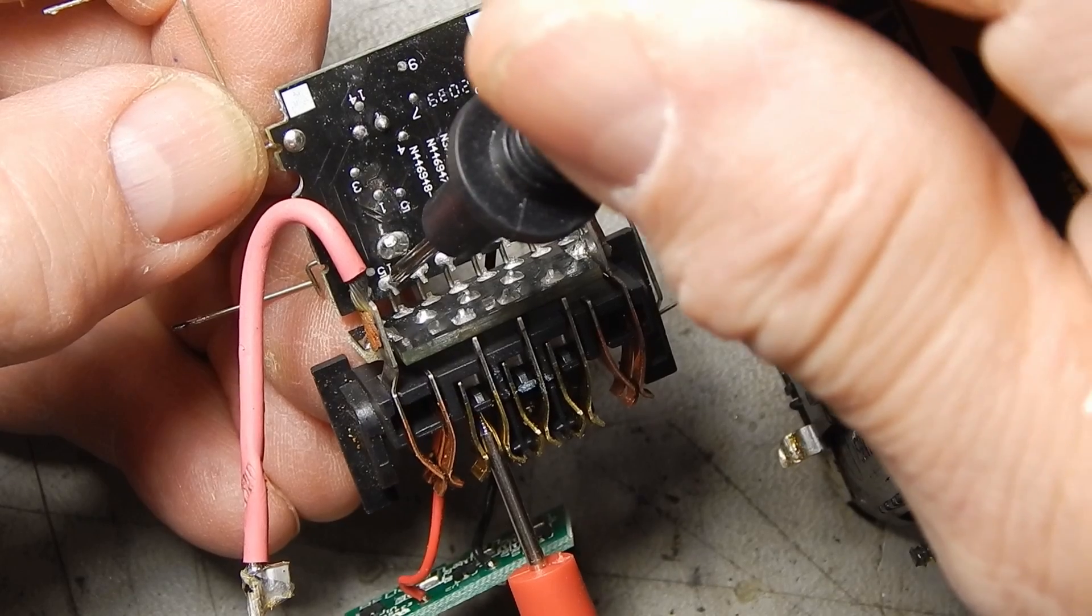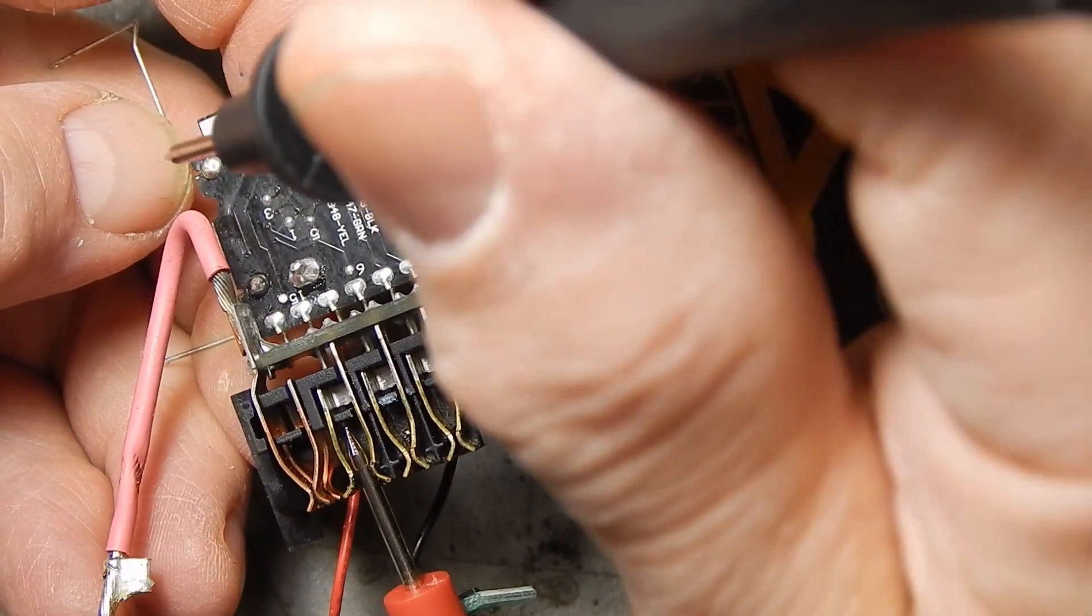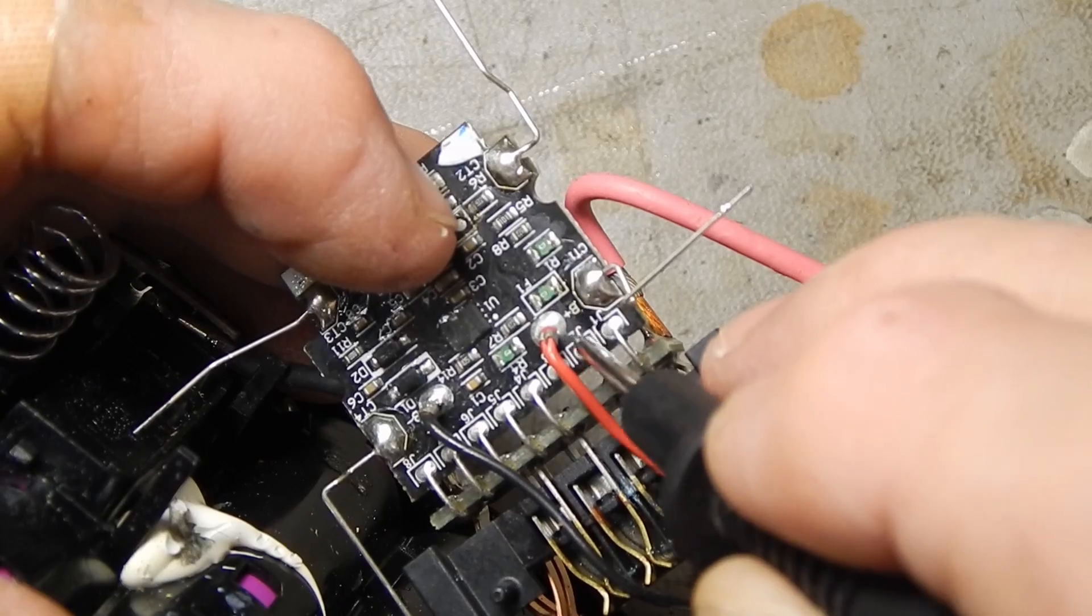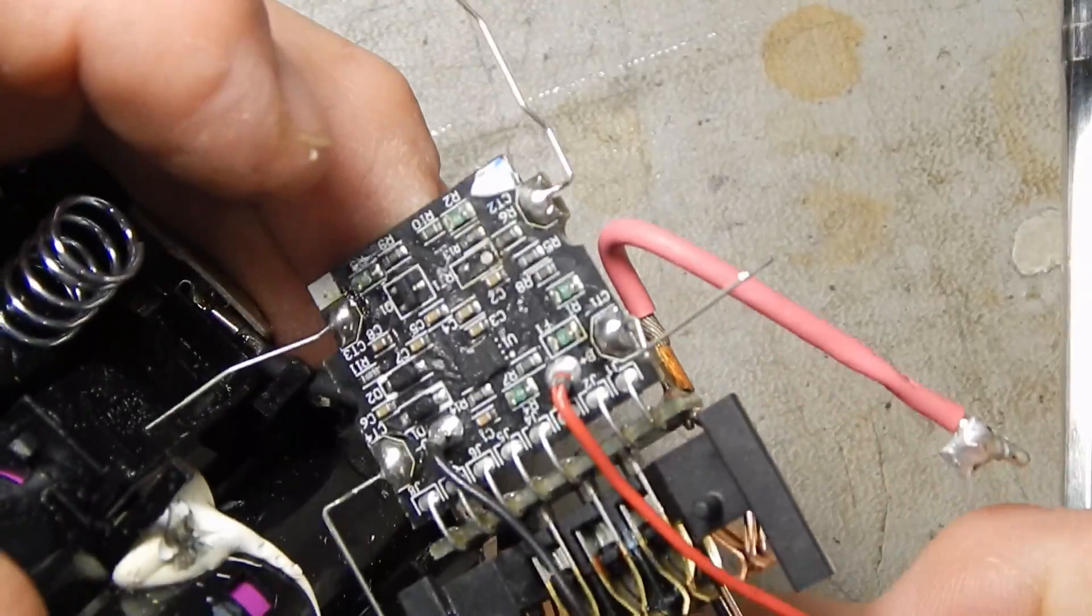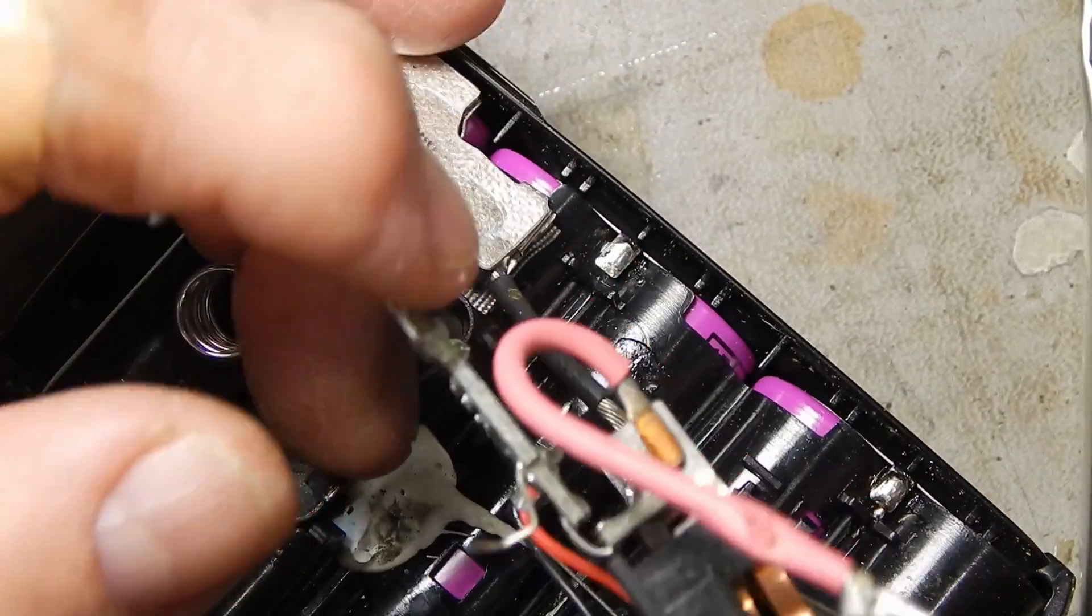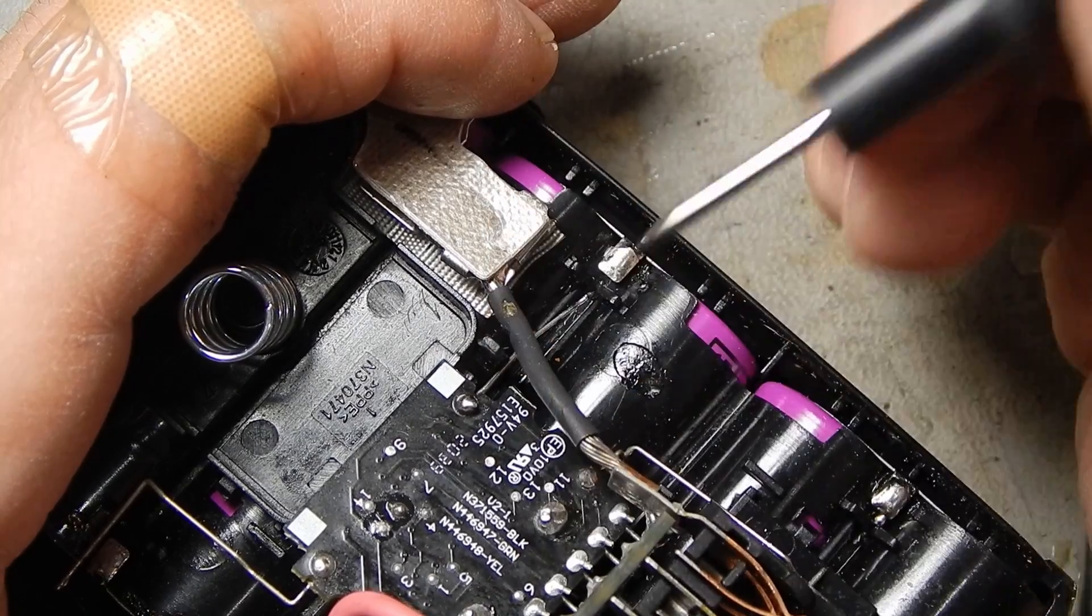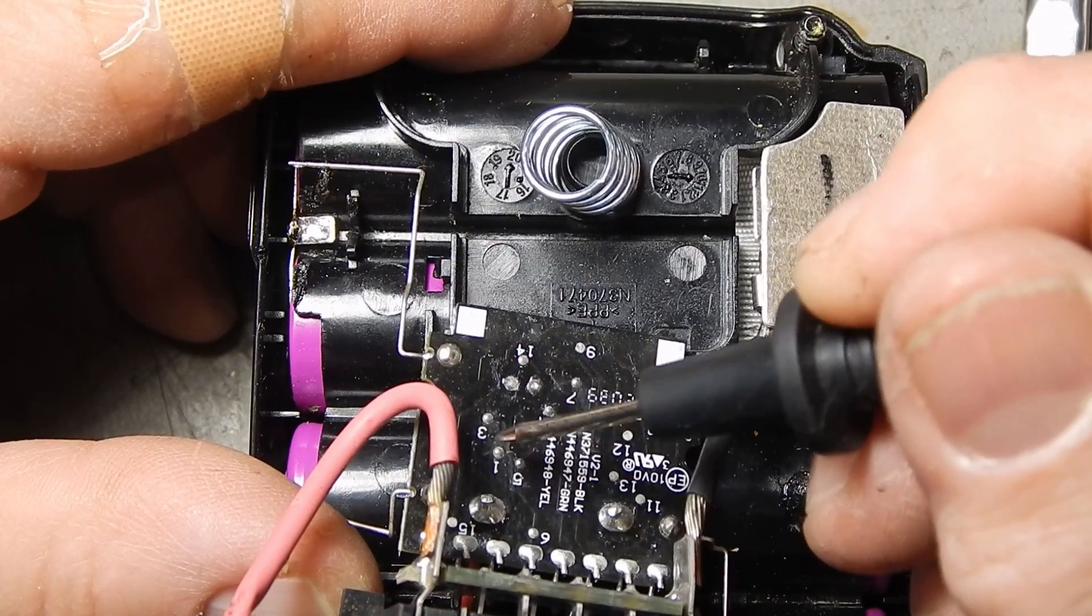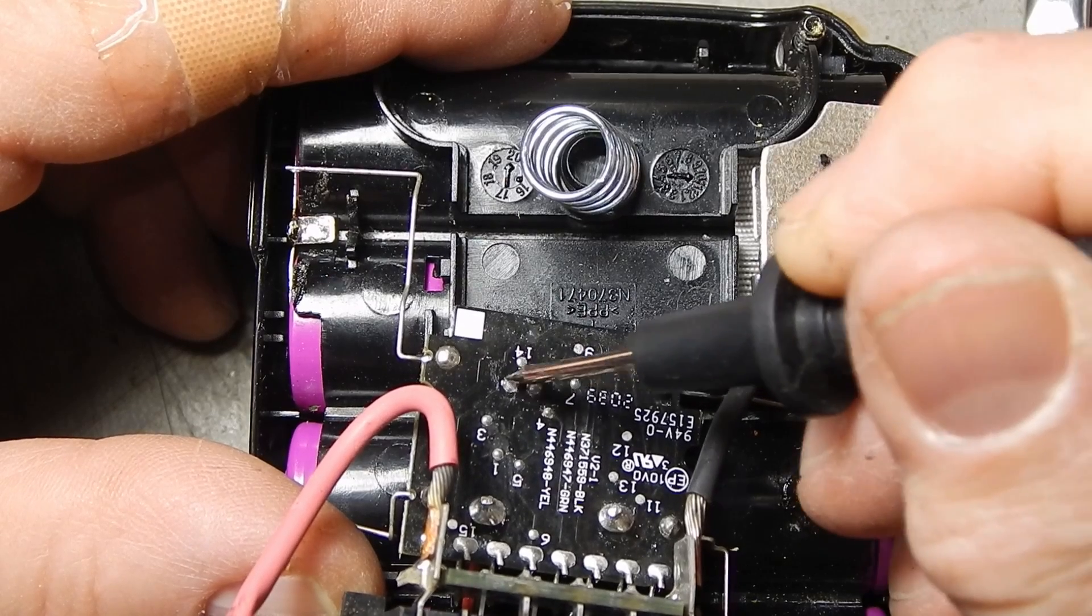It's a little corroded but I do get continuity to that. And I don't see a trace on that side of the board. Let's go back over here. Looks like there's a through hole right there. This is the trace that leads to one side of the thermistor.